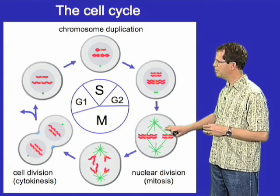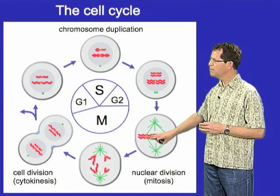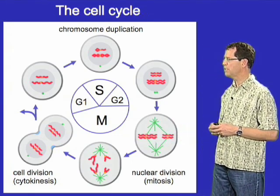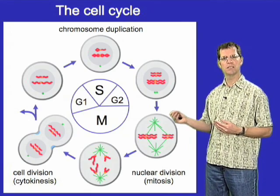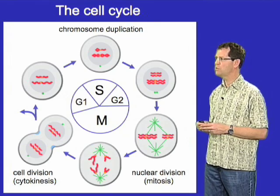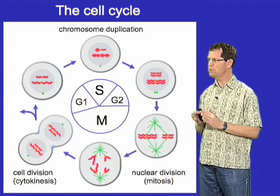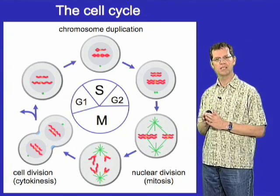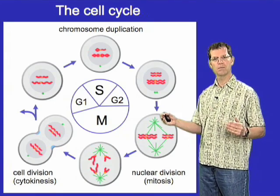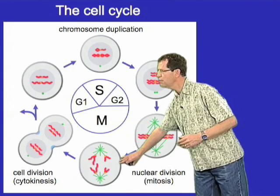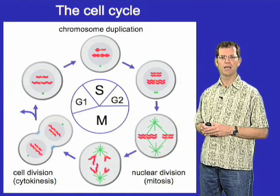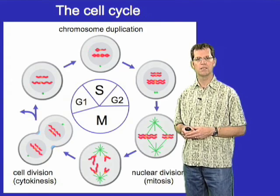By the middle of mitosis, the chromosomes are aligned along the middle of the mitotic spindle, with one sister chromatid attached to one spindle pole and the other sister attached to the other spindle pole. What happens next is that the protein glue that holds the sister chromatids together is dissolved, allowing those sister chromatids to be pulled apart by the spindle in anaphase, and then packaged into individual nuclei and distributed by cytokinesis into the daughter cells.